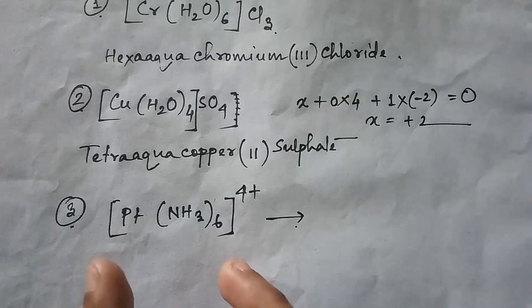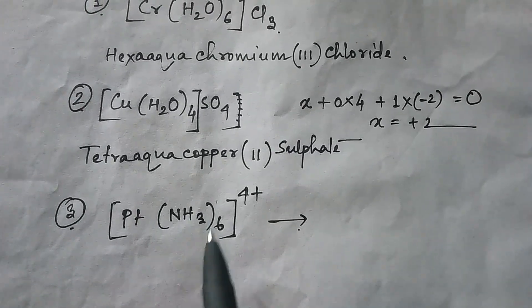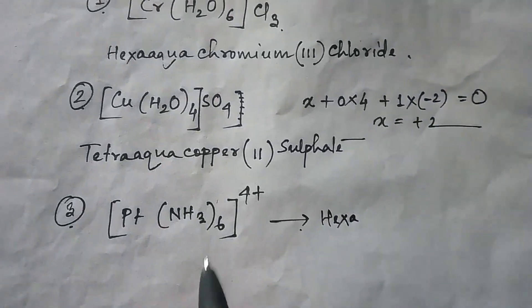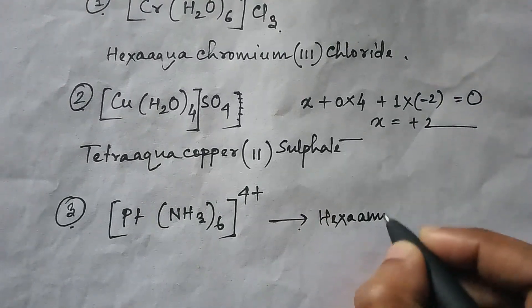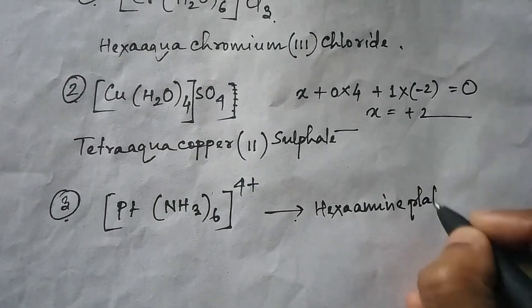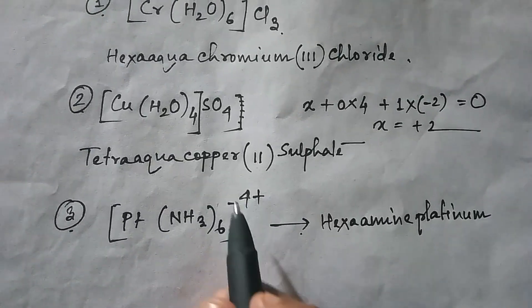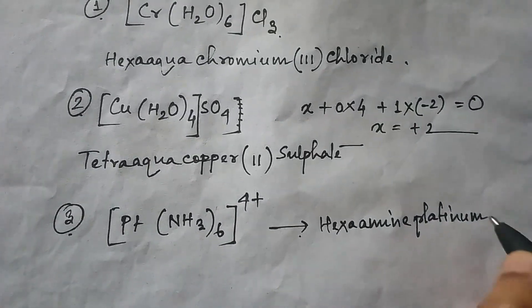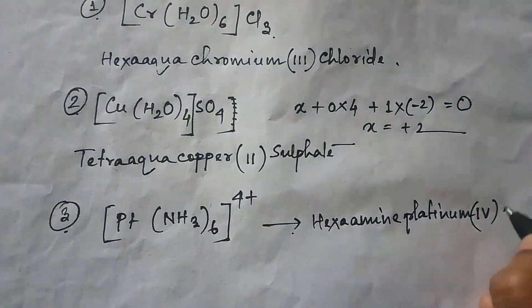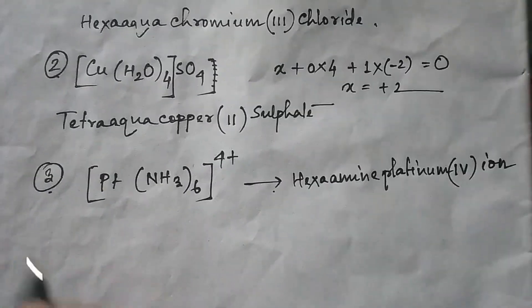Next, consider [Pt(NH₃)₆]⁴⁺. Here only the coordination sphere part is present and it is cationic. First write the number of ligands: 6, so 'hexa'. NH₃ is the amino group, so write 'hexaamine'. Then write the metal atom, platinum. Ammonia is neutral, so the 4+ charge falls on platinum — oxidation state is 4. Since charge is present, write 'hexaammineplatinum(IV) ion'.